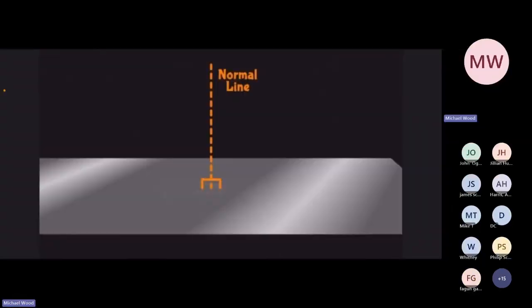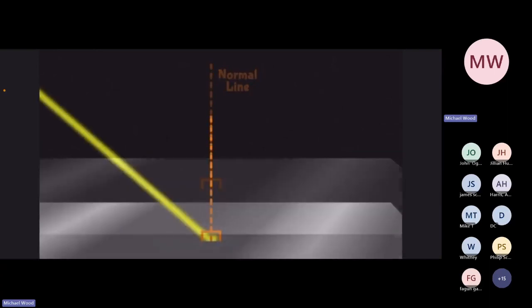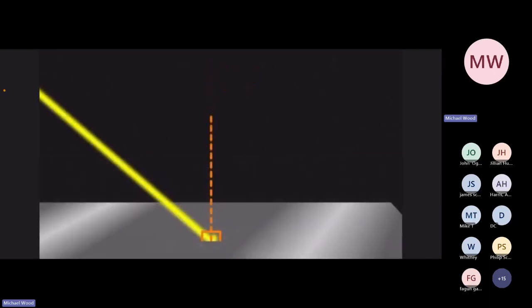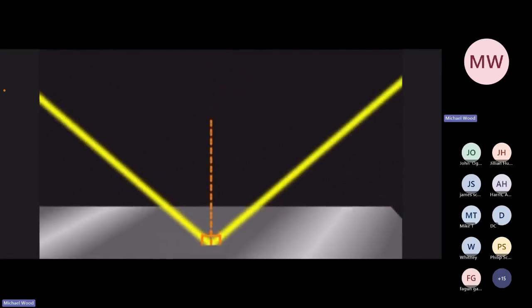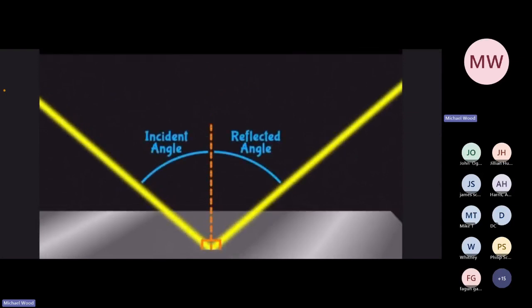Let's talk about the law of reflection. A mirror has a normal line — this will be considered zero degrees. You have an incident angle, which is light coming into the mirror, and you have the reflected angle, which is light leaving the mirror. These two angles are measured off of the normal line and they must equal each other.